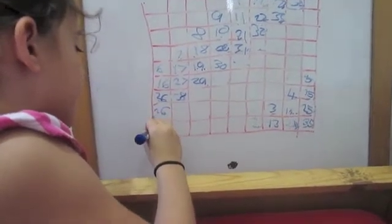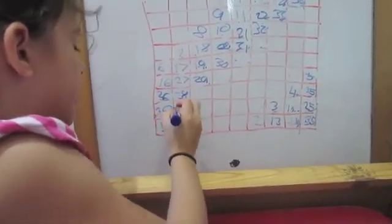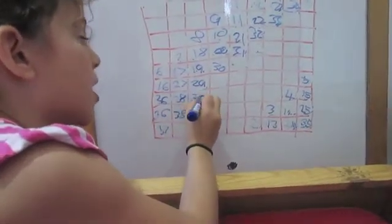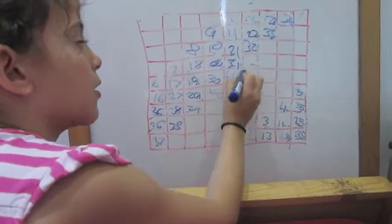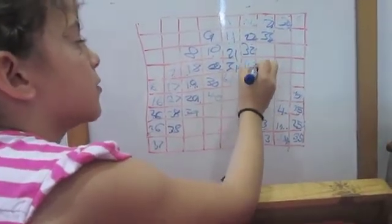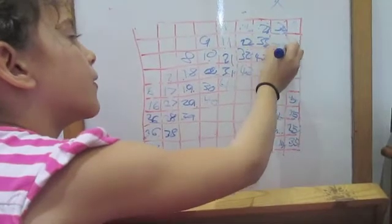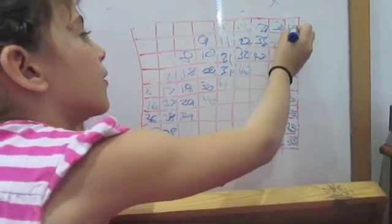Thirty-seven goes on the head. Thirty-eight can go there. Thirty-nine. Forty. Forty-one. Forty-two. Forty-three. Forty-four. Forty-five.